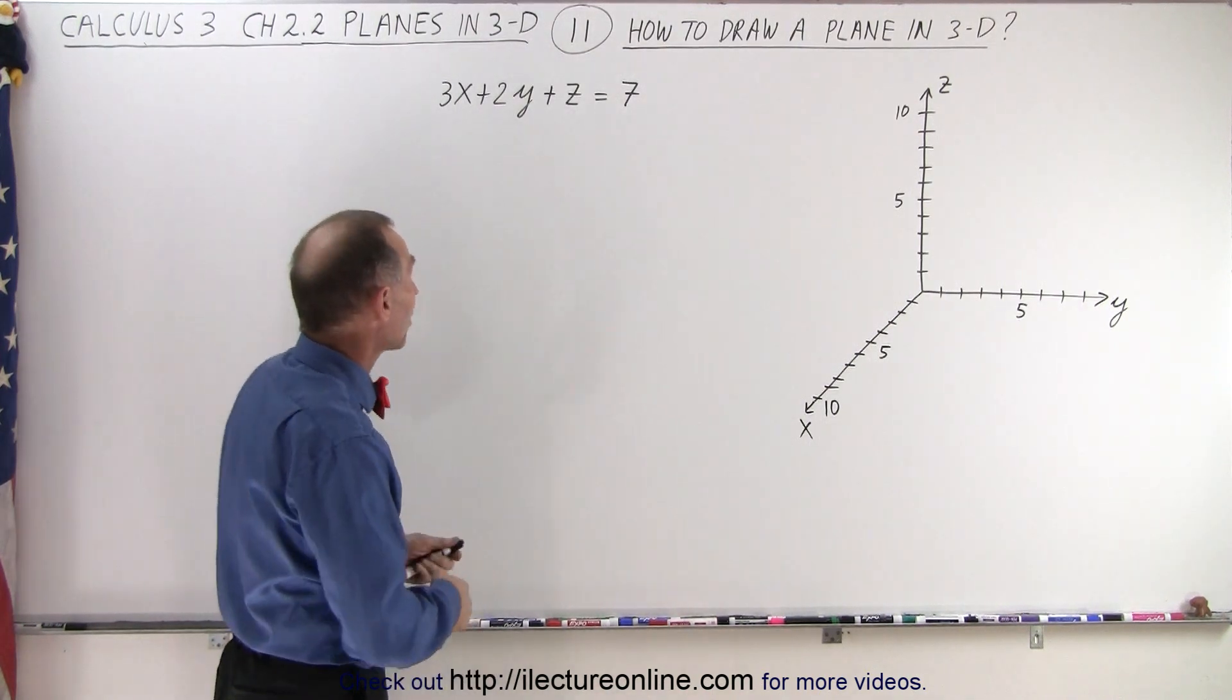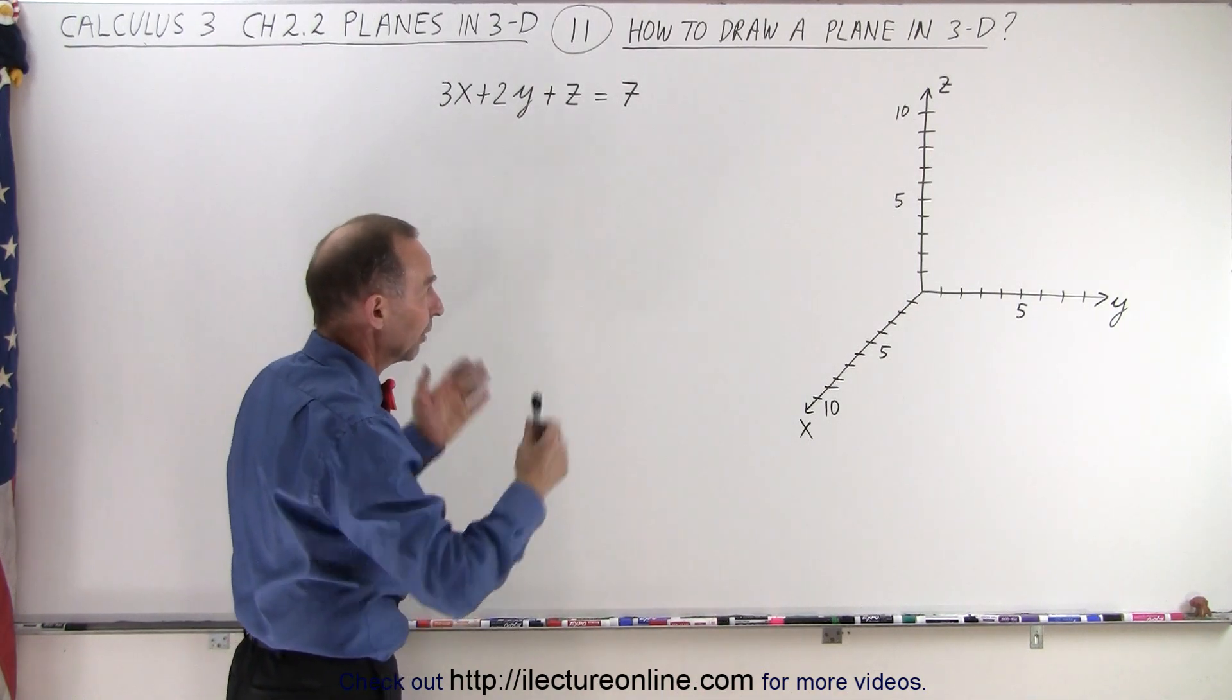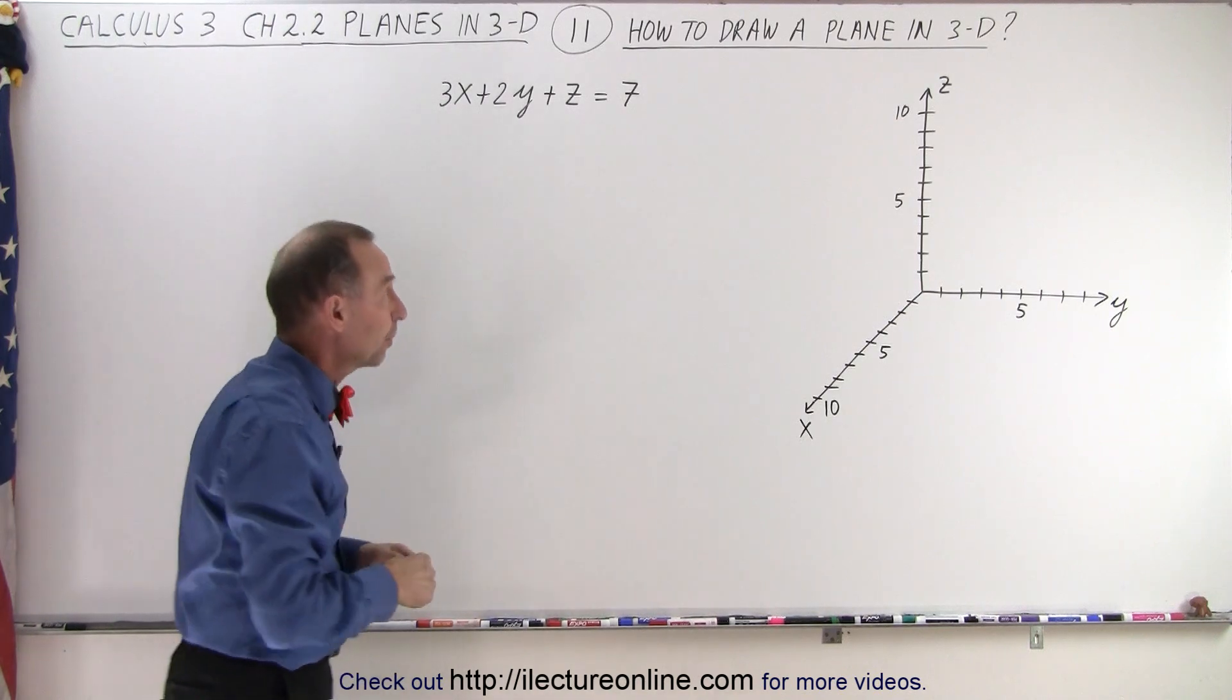Well, let's take our equation that we've seen before of a plane that says 3x plus 2y plus z equals 7. So we're going to graph that in a three-dimensional space.